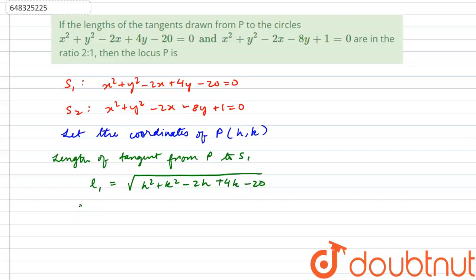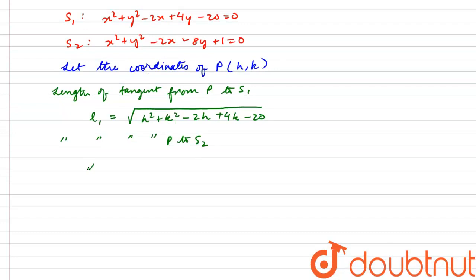Similarly, the length of tangent from P to S2, call it l2, is found by substituting (h, k) into S2, giving the square root of h² + k² - 2h - 8k + 1.